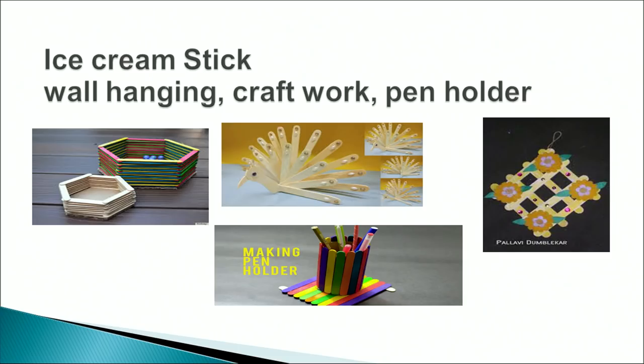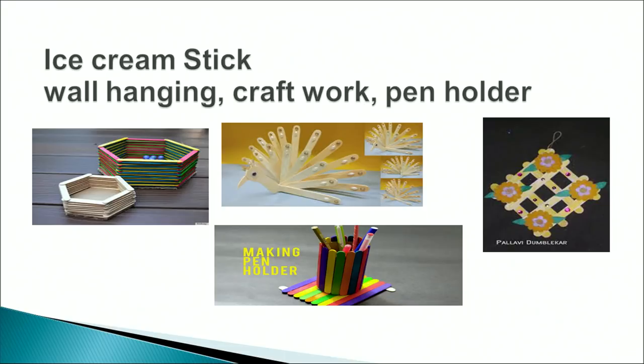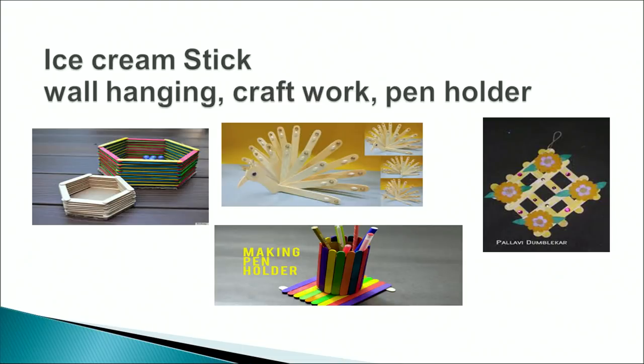Another waste material is ice cream sticks. With ice cream sticks we can prepare wall hangings, craft work, a pen holder, and small baskets — joining the sticks one by one, pasting them together and giving any shape like rhombus, square, or rectangle. We can also prepare decorative items like a peacock, and wall hangings where we paste flowers and other decorative material to make them more beautiful.